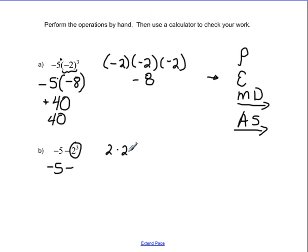2 times 2 times 2. 2 times 2 is 4. Times 2 is 8. So this is going to be negative 5. And in this case, it is just negative 5 minus 8. There's no multiplication here. And when I do negative 5 minus 8, that's going to give me negative 13.